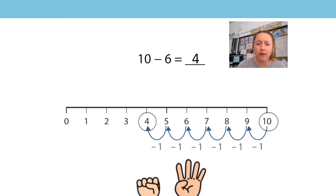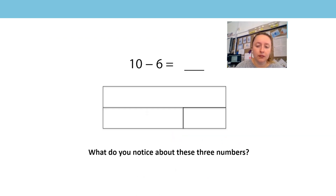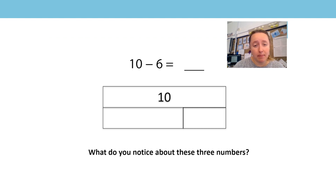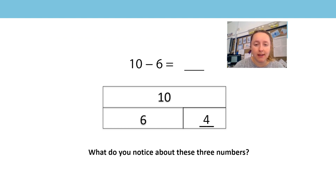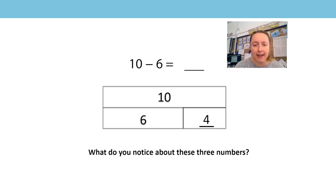Is there a better way to subtract 6 rather than counting back in ones? Let's think about what we already know about these numbers. I can represent the numbers in the equation as a bar model. 10 is my whole, so I put that in the whole bar. 6 is a part, and my missing number is the other part, which is 4. I wonder, what do you notice about these numbers? I know that 10 is made of 6 and 4, 4 and 6. That's much better — if I know my addition pairs to 10, this can also help me with my subtraction.